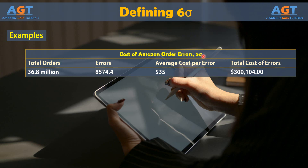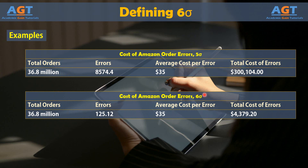As we can see, with a Five Sigma level of accuracy, for 36.8 million total orders there were 8,574.4 errors, and with an average cost of $35 per error, the total cost of errors would be $300,104. But considering the same 36.8 million total orders, if a Six Sigma level of accuracy was maintained, there would be only 125.12 errors, and with an average cost of $35 per error, the total cost of errors would be just $4,379.20 — which is so much less than the $300,104 cost of errors in a Five Sigma process.